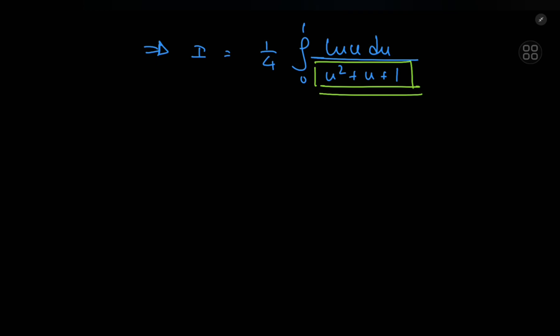How exactly am I going to do that? Well, first things first, I just rewrite the integral. Yeah, I'm just going to rewrite the exact problem we have. We have a quarter of the integral from 0 to 1 of log u divided by u squared plus u plus 1 du.